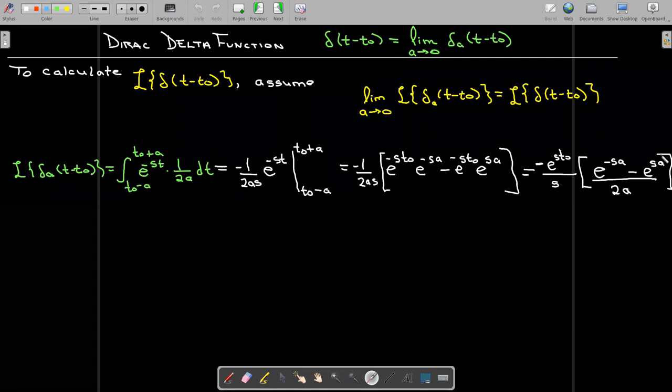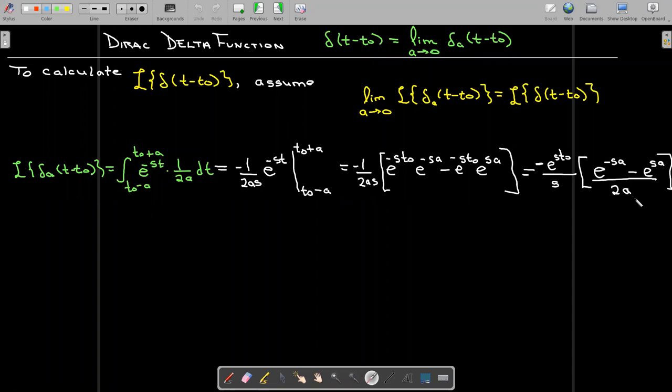And we can factor out the e to the s times t-naught over s. And so we're left with this expression. This is the expression where we need to take the limit. So let's take the limit of that expression: e to the minus sa minus e to the power of sa all over 2a.